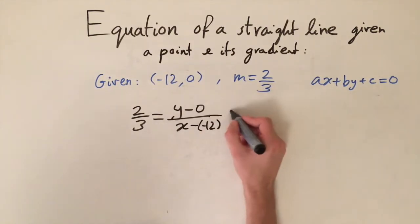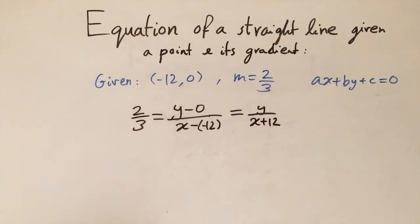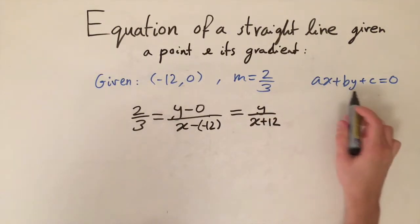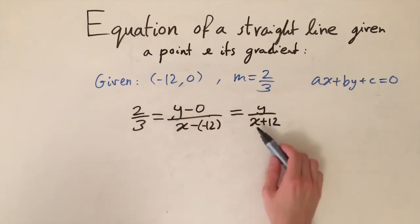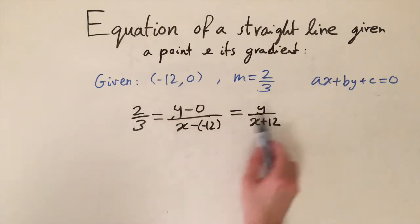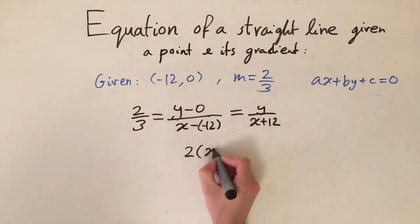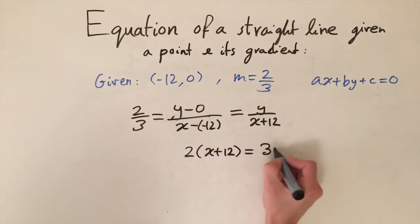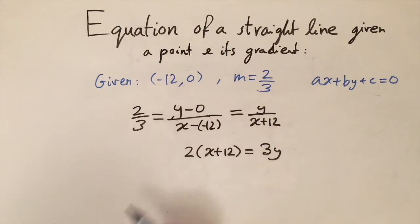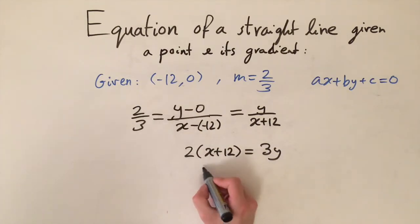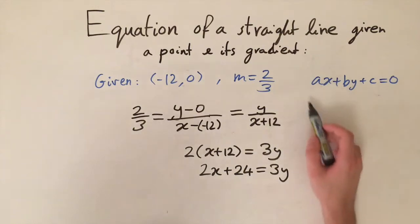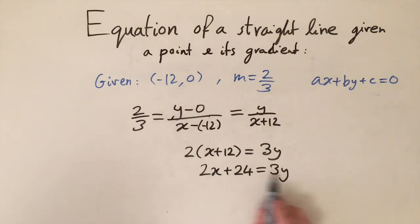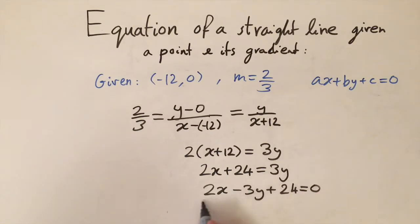To get into the form where a, b, and c are integers, we cross-multiply both denominators: bring x plus 12 to the top and the 3 to the right-hand side. This gives 2 times x plus 12 equals 3y. Expanding: 2x plus 24 equals 3y. Subtracting 3y from both sides gives 2x minus 3y plus 24 equals 0, which is the solution to this problem.